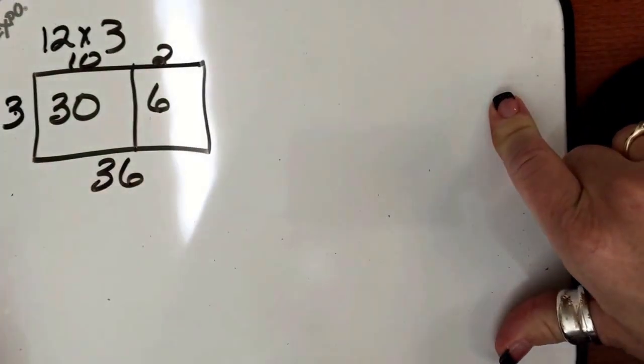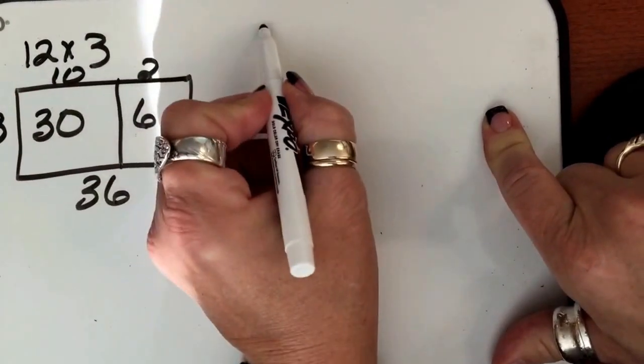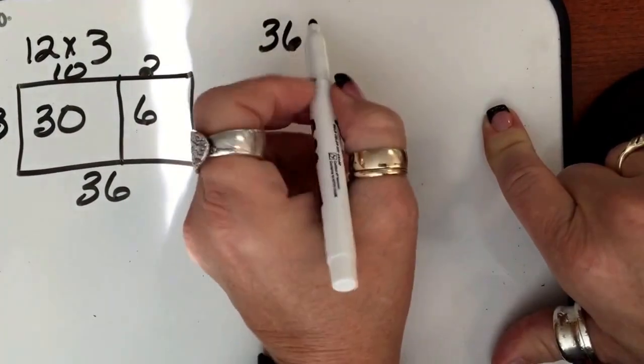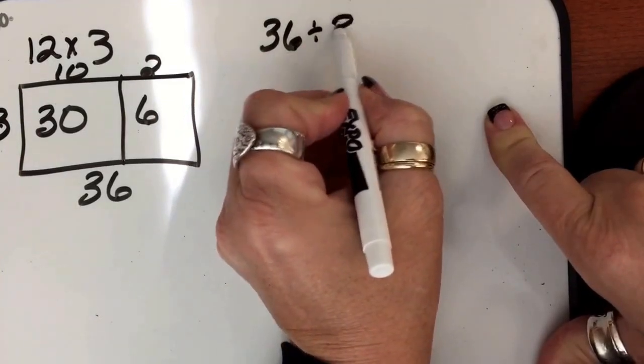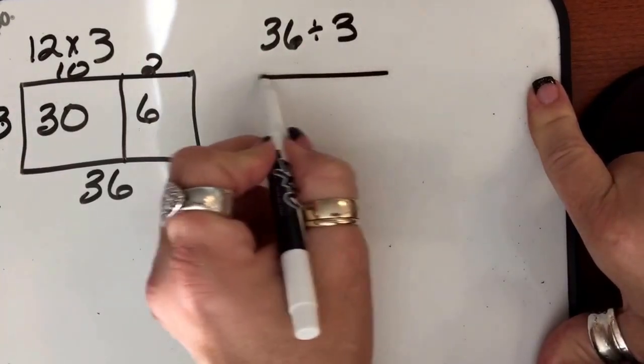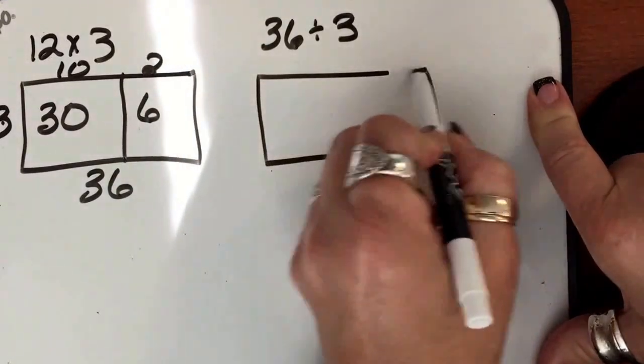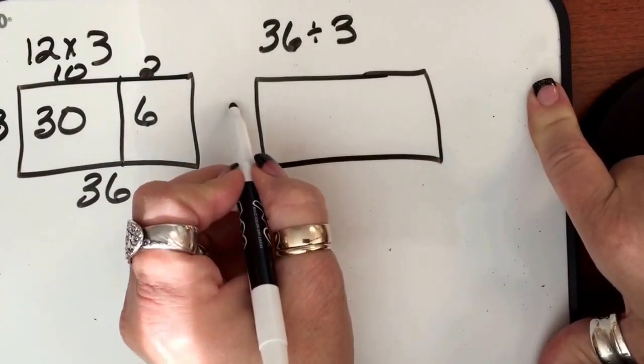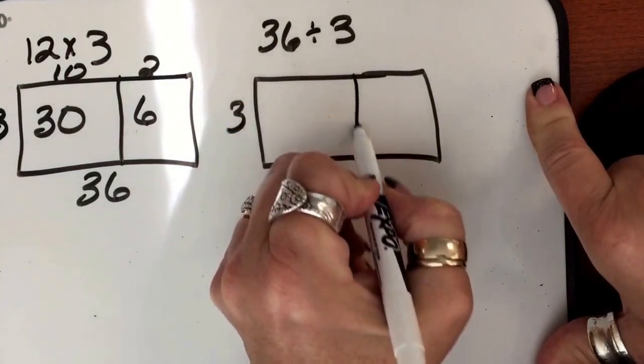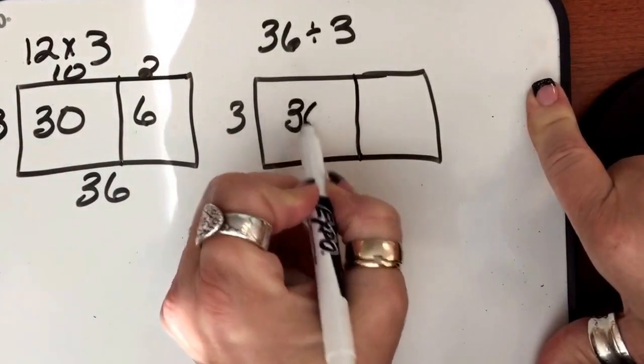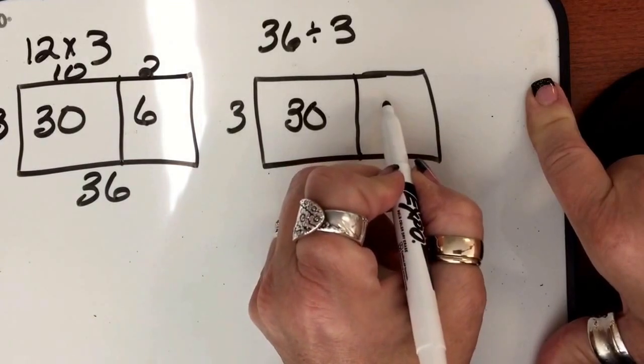So now, let's look at it the other way. We have 36, remember, and we're going to make sure you tell them, the kids, about the related facts. 36 divided by 3. So if we look at this, right, so we have 3, and we have 30.